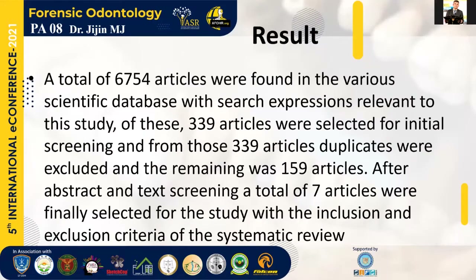A total of 6,754 articles were found in various scientific databases using the search expressions relevant to the study. From these, 333 articles were selected for initial screening, and after removing duplicates, 159 articles remained. After abstract and full-text screening, a total of seven articles were finally selected for the study within the inclusion and exclusion criteria of the systematic review.